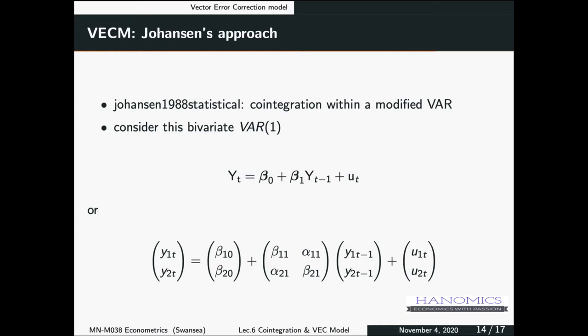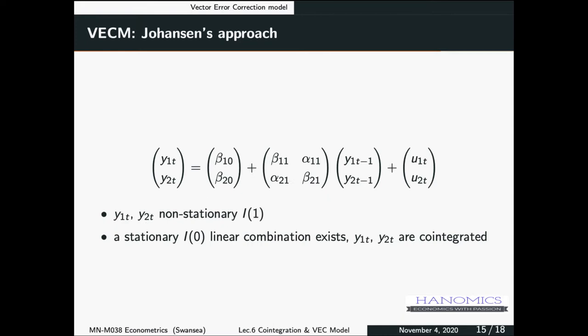Just to simplify things, we have two variables on the left-hand side. That means we have two equations, and it's VAR(1), meaning we have only one lag. The idea is the same. We assume that Y1 and Y2 are I(1) — so they are non-stationary. A linear combination of Y1 and Y2 would produce, if such a combination exists, a stationary error term or I(0). That means Y1 and Y2 are cointegrated.